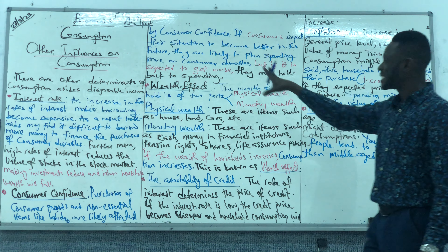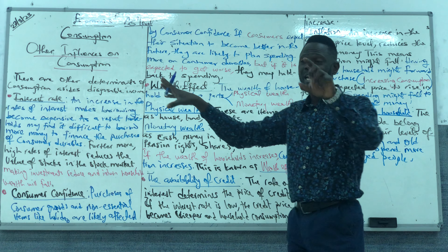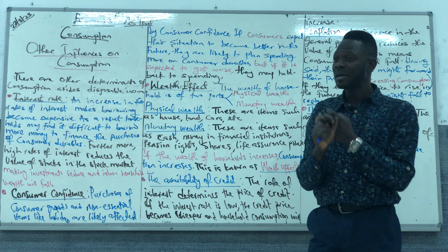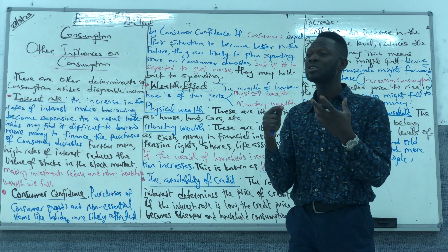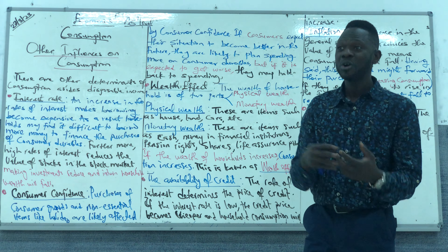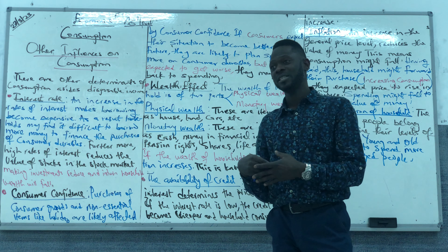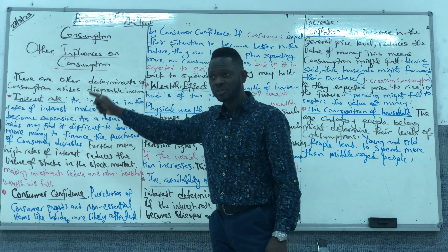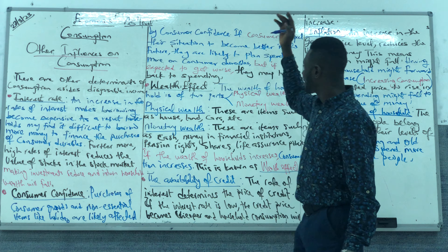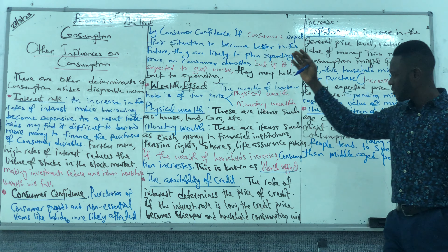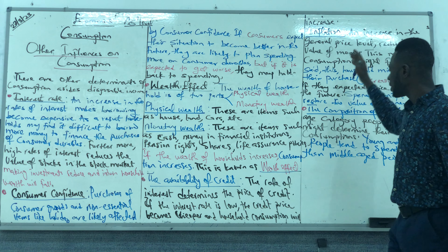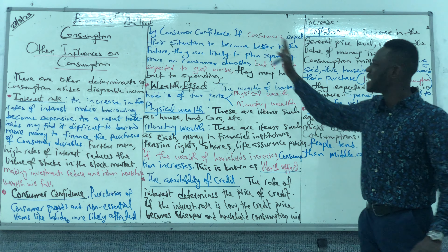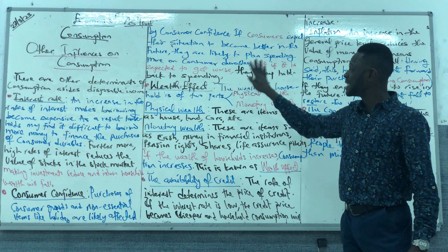So these are the factors that determine consumption alongside income. Income is also a factor that determines the level of consumption, because the amount of money available for you to spend or save will determine your consumption. In summary, besides disposable income, we have interest rates, consumer confidence, the wealth effect, availability of credit, inflation, and the age composition of the household. These are the determinants of consumption.